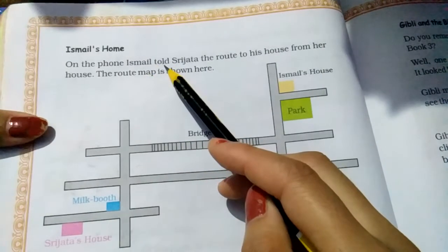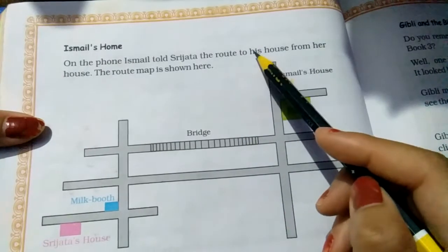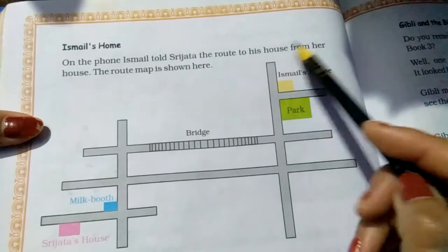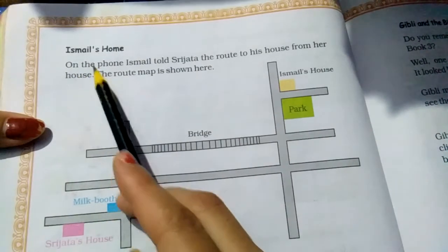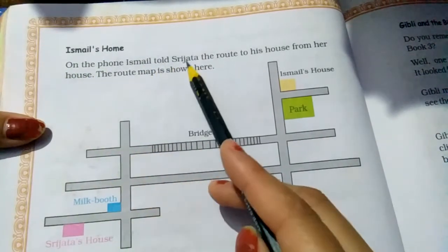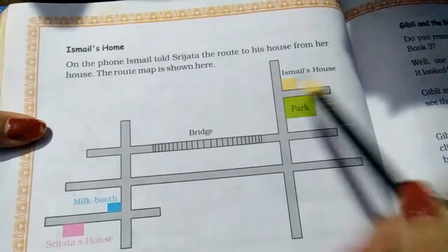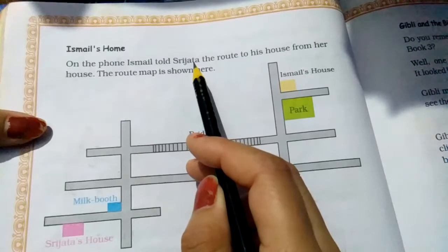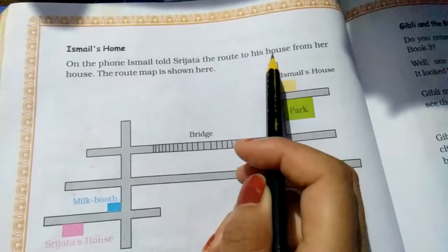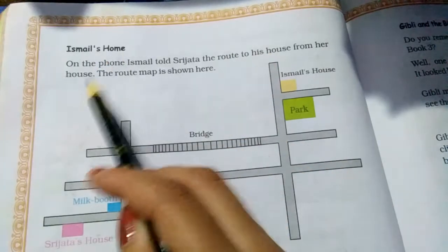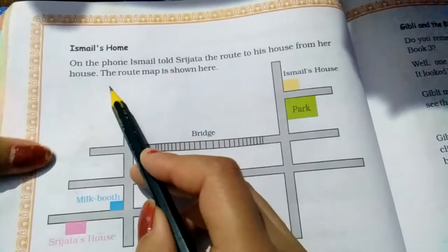Ismail told — Ismail ne Srijata ko bataya — the route to his house. On the phone, Ismail told Srijata the route (raasta) from her house to his house. Ismail Srijata ko apne ghar ka raasta bata raha hai.